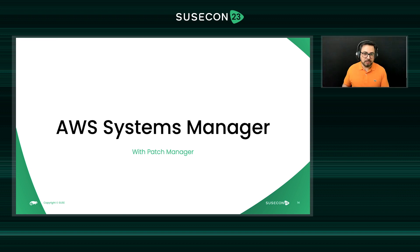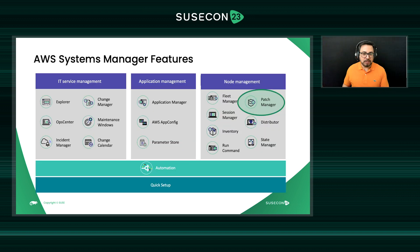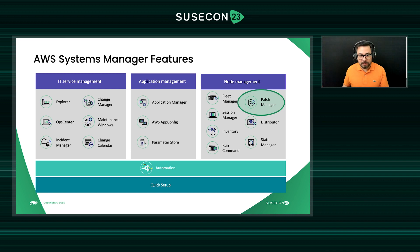AWS Systems Manager, specifically the Patch Manager feature, allows customers to patch their systems. At its core, Systems Manager is a secure end-to-end management solution for resources on AWS, multi-cloud, or hybrid environments. It allows you to centralize operational data from multiple AWS services and automate tasks across your resources. It provides a central view to manage your resources for complete visibility and control over operations.